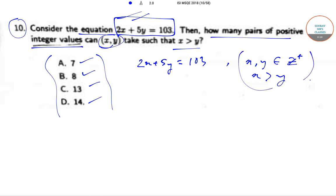Now, we note that 2x is always even and 5y is odd or even depending upon whether y is odd or even. Now, if 5y is even, when we subtract, 103 is always odd.